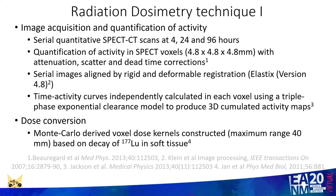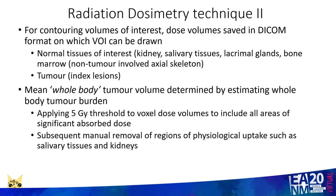In my institution we've been routinely using voxelated dosimetry for a number of years, conducting serial quantitative SPECT-CT scans following treatment, then using rigid and deformable registration to align these images, and constructing time-activity curves in each voxel using a triple-phase exponential clearance model. Then using Monte Carlo-derived voxel dose kernels based on the decay of Lutetium-177, it is possible to produce DICOM files showing dose volumes which can then be used to draw volumes of interest on normal tissues and tumour.